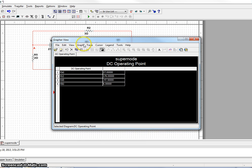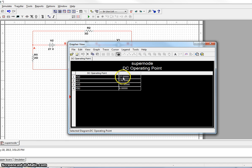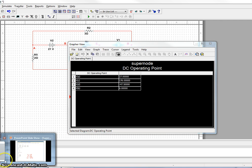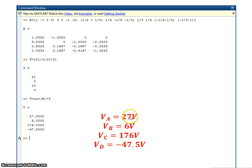When you simulate, I see VA as 27 volts, VB as 6 volts, VC as 176 volts, and VD as minus 47.5 volts. And that was exactly what we had here, 27, 6, 176 volts, and 47.5 volts.